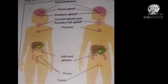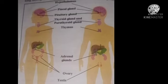Why is it called a ductless gland? Because there is no duct. These glands do not have any arrangement to either store or carry their secretion. Hence, as soon as hormones are produced, they are directly released into the blood circulation. Endocrine glands are present at specific locations in our body, and their secretion reaches all parts of the body via blood.